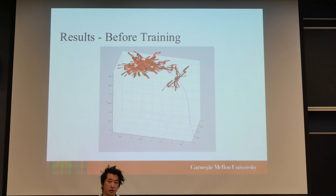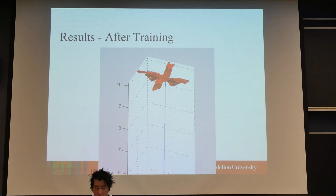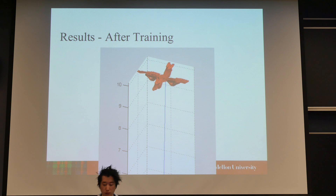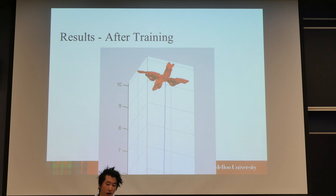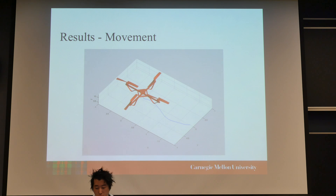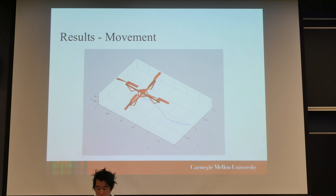Initially, our quadcopter performs poorly — it just quickly crashes. But after 70 seconds of flight time training, it hovers about a set point with less than 10 centimeters of error, which does pretty well. In order to get it to move, we gave it an offset in the velocity sensor so that it tried to zero that offset, and by zeroing the offset, it moves. In this case, the X direction had some error in the Y direction, but it's very minimal.